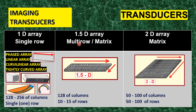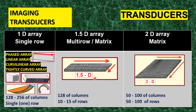The next category is the 1.5D array transducers, sometimes called multi-row transducers. These have multiple rows of columns — typically around 128 or 256 columns — with several rows alongside them. This is in contrast to the single row of the 1D transducers. The multiple rows here are limited in number, for example 7 or 10 rows.